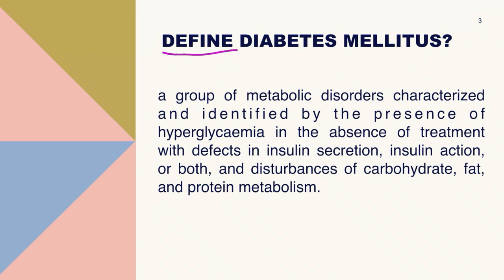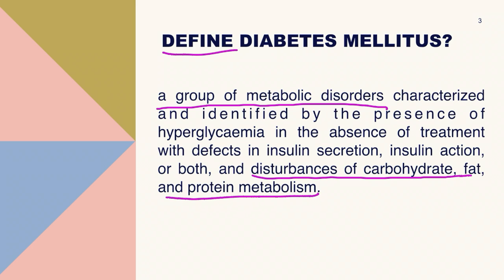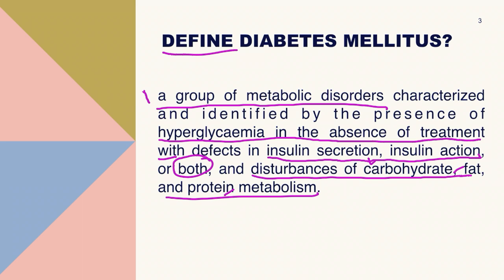First, define diabetes mellitus. Diabetes mellitus is a group of metabolic disorders due to disturbances of carbohydrate, fat, and protein metabolism — not carbohydrate alone. It is characterized by the presence of hyperglycemia when treatment is not provided, and the root cause is due to either defects in insulin secretion, the action of insulin, or both. These four components must be present when defining diabetes mellitus.